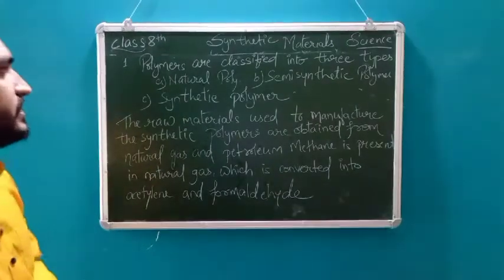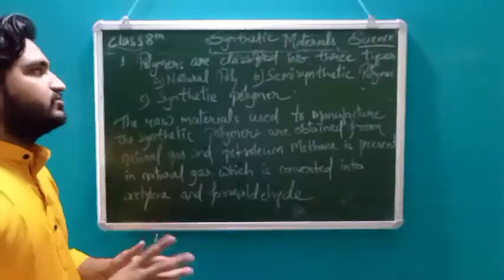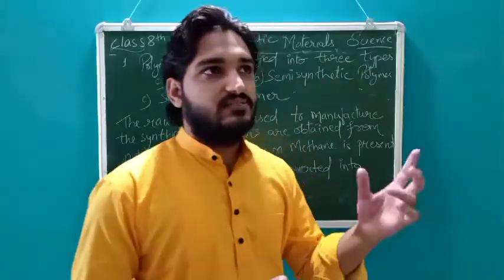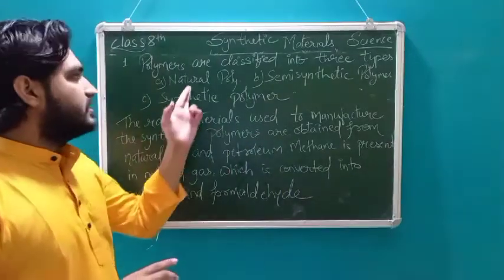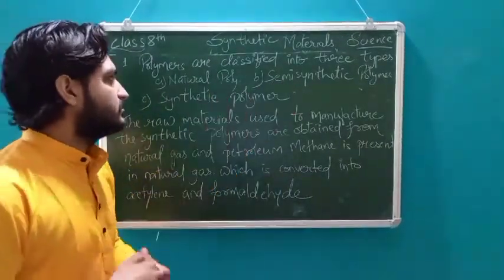Polymers are classified into three types. One is natural, pure natural. Another is semi-synthetic, or synthetic combination, which is synthetic and natural. So semi-synthetic is natural and synthetic.